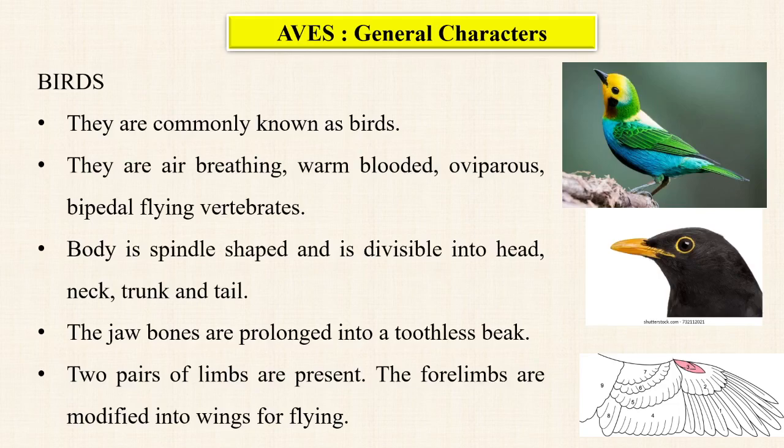Birds are compulsorily air-breathing. They are warm-blooded animals. In the animal kingdom we have only two groups which are warm-blooded: one is birds and another group is mammals. Warm-blooded animals can maintain a constant body temperature. Birds maintain a higher body temperature — on average 40 degrees Celsius — because they need more energy for flying, and higher body temperature makes enzymes work faster.